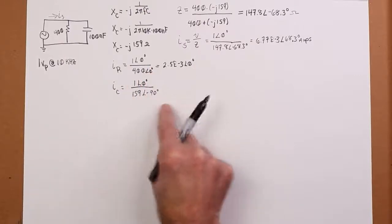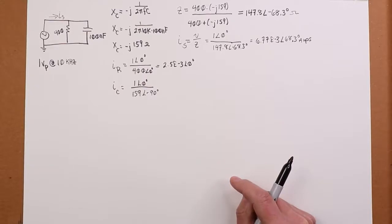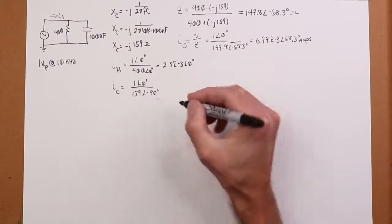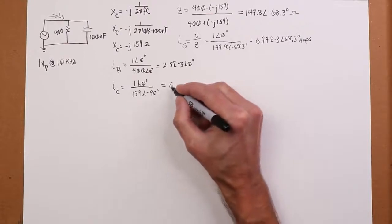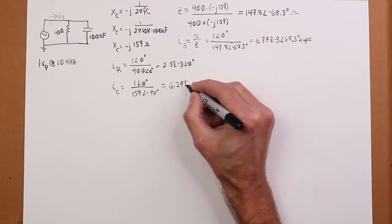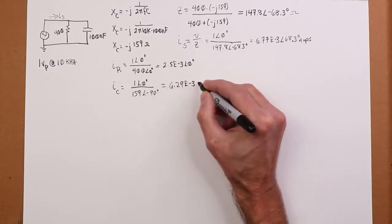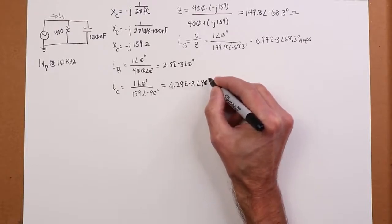Anyway, when we grind through that, we're going to get 6.29 milliamps, obviously at an angle of 90 degrees.